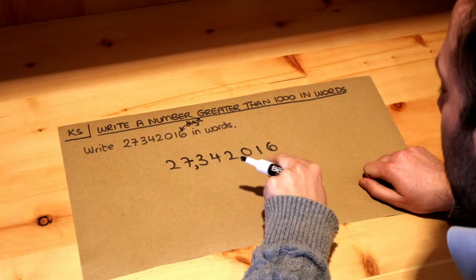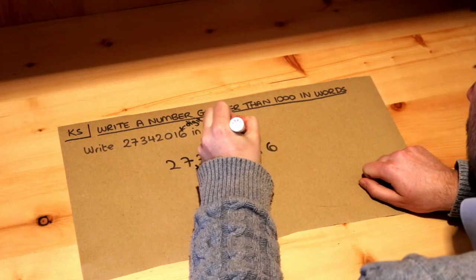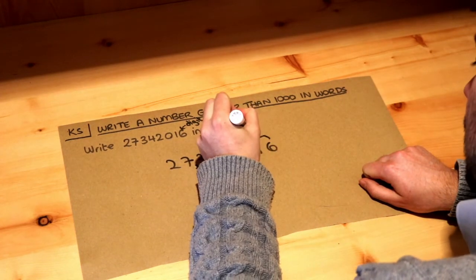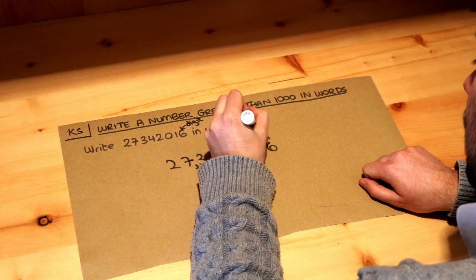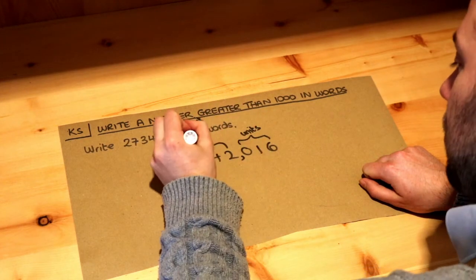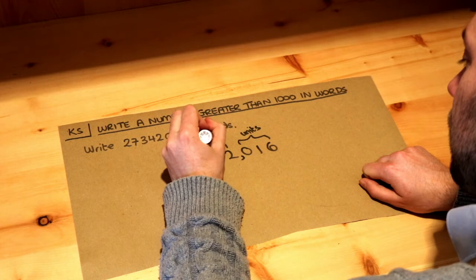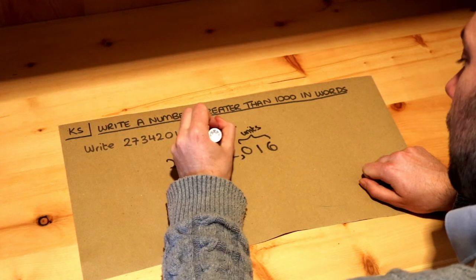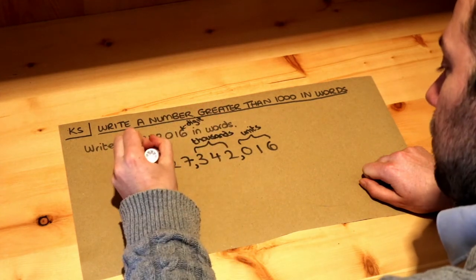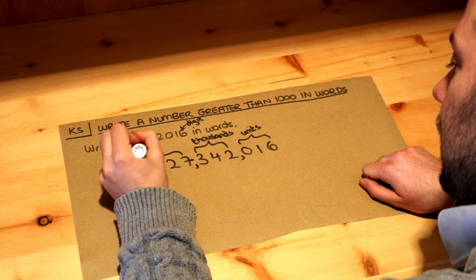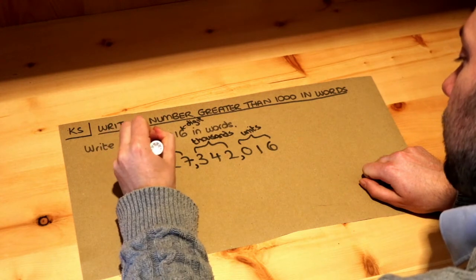If we look at these different groups of numbers from right to left: this first group is how many units, tens, and hundreds we have. This next group is how many thousands we have, and this next group is how many millions we have.